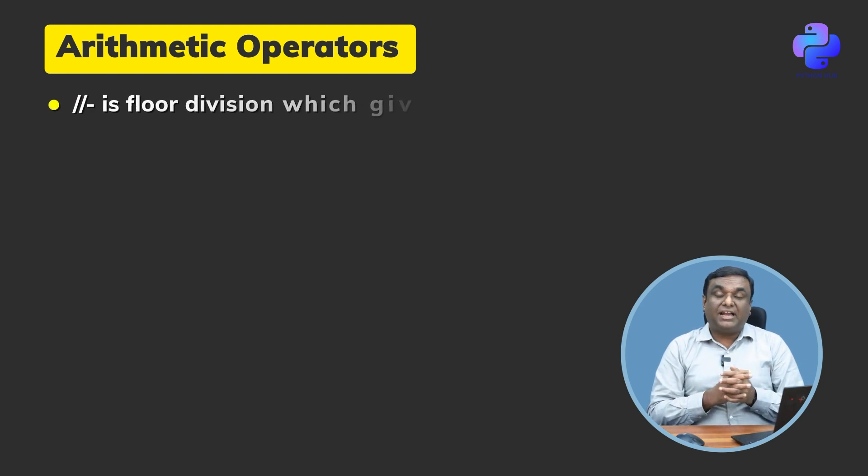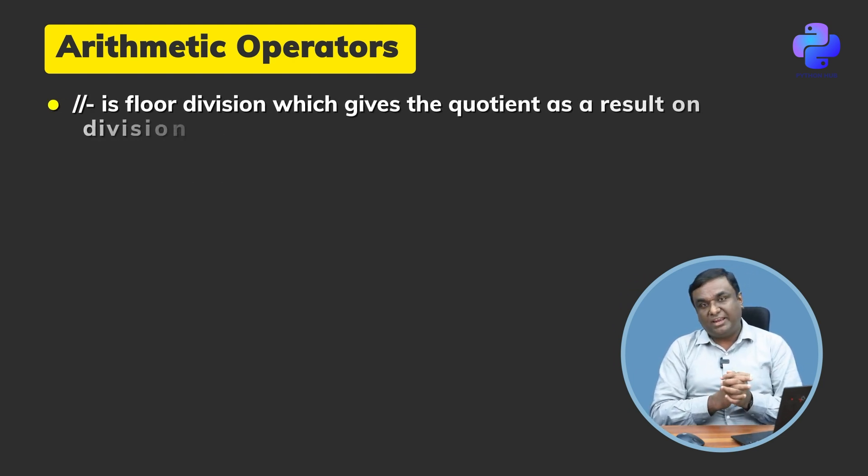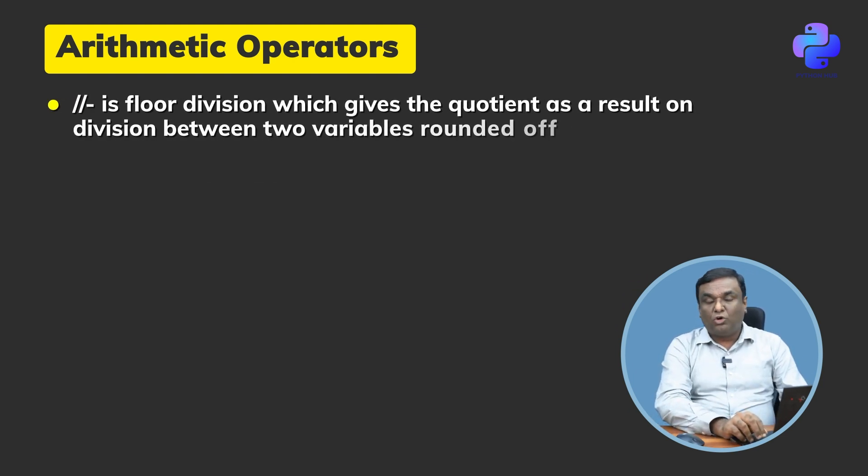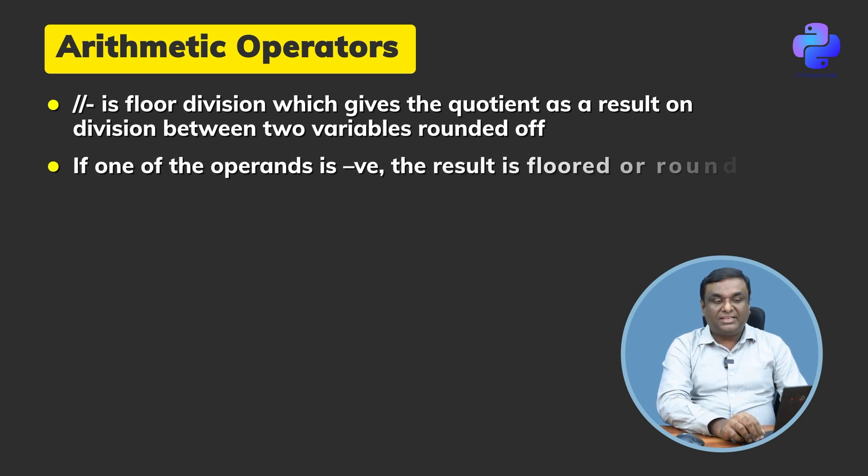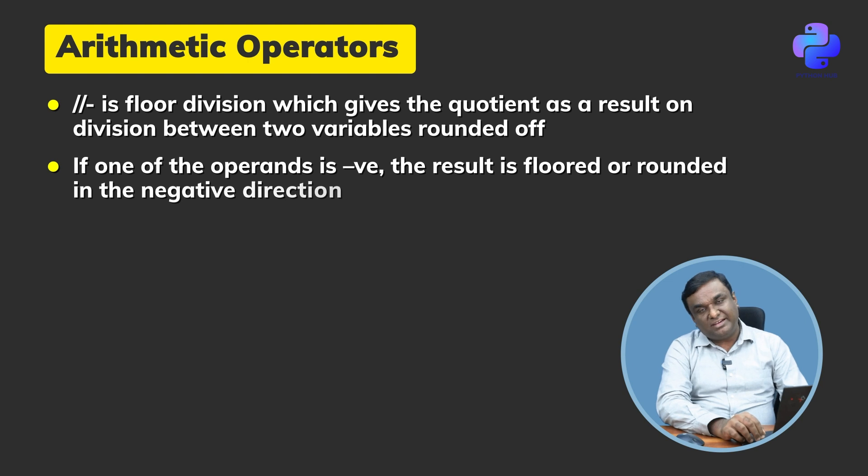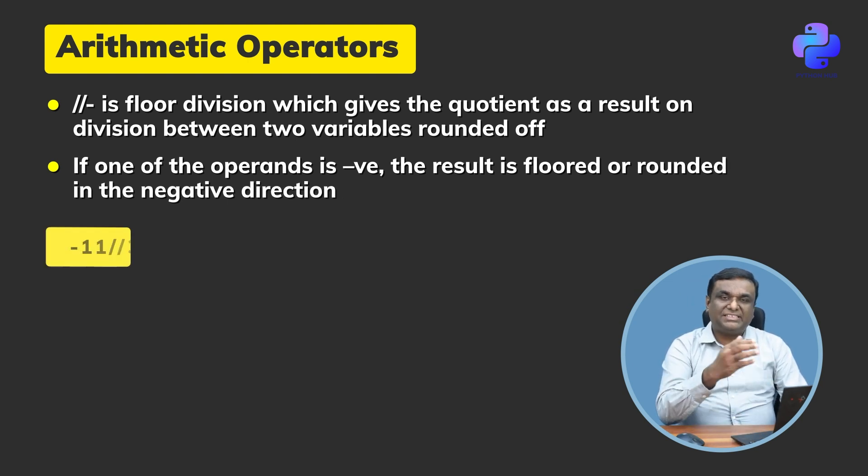Double backslash is another operator in Python. It is floor division, which gives the quotient as a result on division between two variables rounded off. If one of the operands is negative, the result is floored or rounded in the negative direction. For example, -11 // 3.